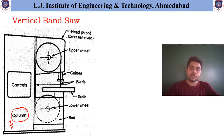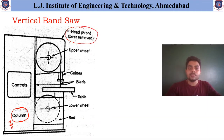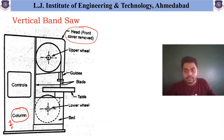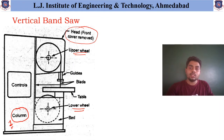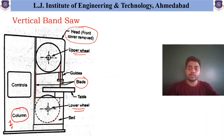The second part is the head, and this head consists of the main power transmission element, or we can say the motor. This machine consists of two wheels — the first one is the upper wheel and the second one is the lower wheel. On the rims available, this blade rotates. The rotation of this blade will help us to remove the material.